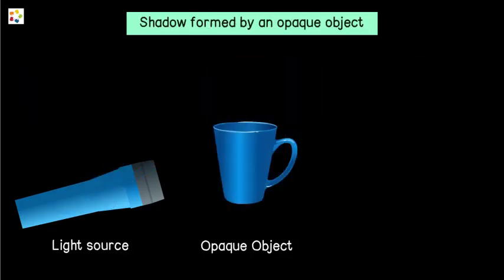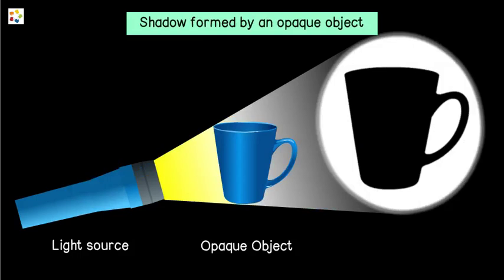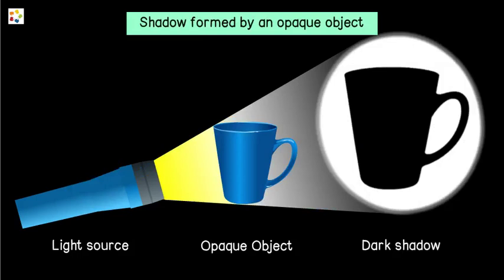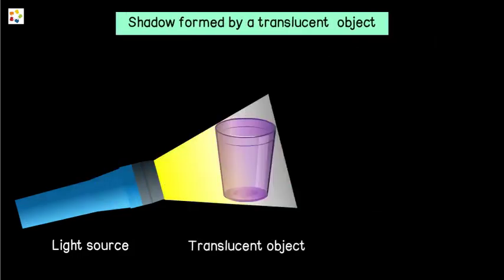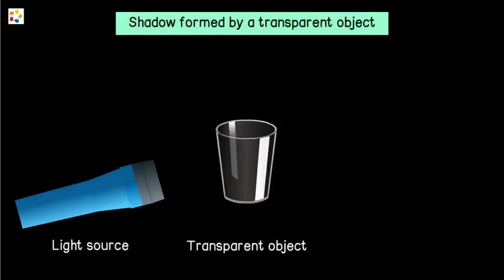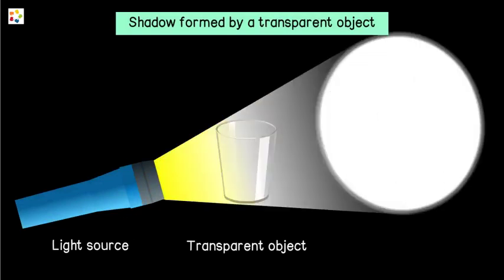When light strikes an opaque object, it forms a dark shadow. When light strikes a translucent object, it forms a faint shadow. When light strikes a transparent object, no shadow is formed.